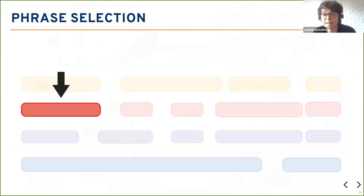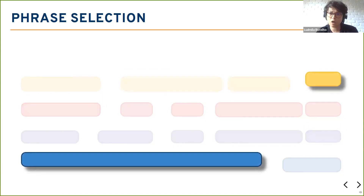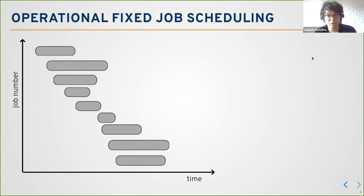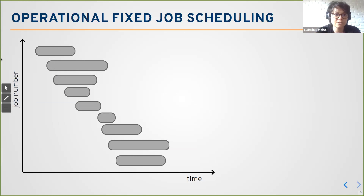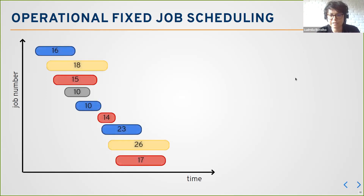Let's give another example. Suppose we decide to select first the red one — it's rich in information. This is one possible, non-conflicting solution. Or we can try a bigger phrase that covers a lot of time and then a smaller one afterward. Why are we talking about fixed start and end times? Because this is related to another kind of scheduling problem: the operational fixed-job scheduling problem. We have a list of jobs to run on certain machines. These jobs have fixed start and end times, and different weights — meaning some jobs give more profit than others.